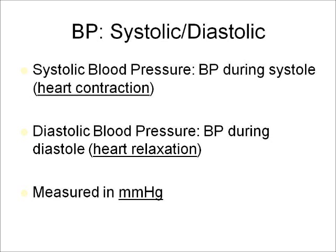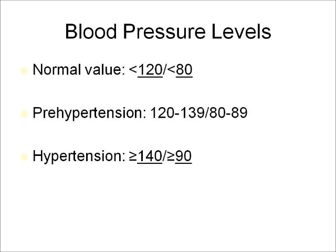Blood pressure is measured in millimeters of mercury. Blood pressure levels: normal value is less than 120 over less than 80 — so somebody with a blood pressure of 120 over 80 would not be considered normal, they'd be considered prehypertensive. Prehypertension is 120 to 139 systolic and 80 to 89 diastolic. Hypertension is defined as greater than or equal to 140 over greater than or equal to 90. Make sure you know and understand those.